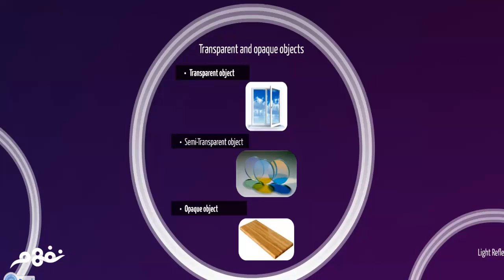Transparent and opaque objects. We have three types of objects. Transparent object is the object that lets light pass through with no shadows formed such as a clear window. Semi-transparent object is the object that lets only light go through and forms a shadow that is very light such as bathroom window. Opaque objects is the object that lets no light pass through and forms a shadow such as a table, a chair, any form of food.